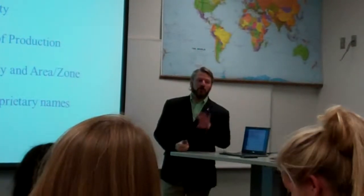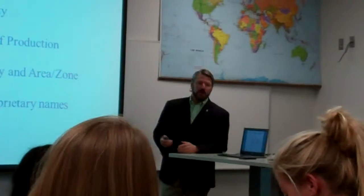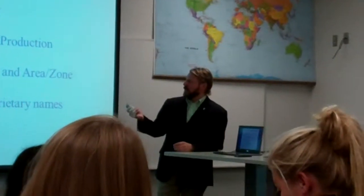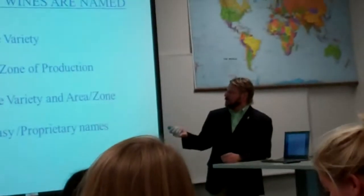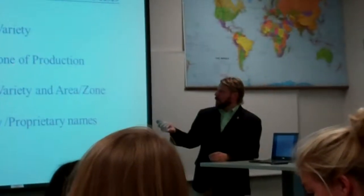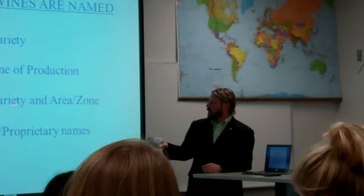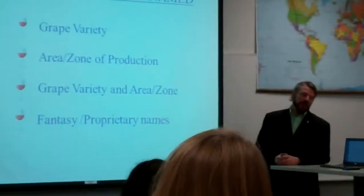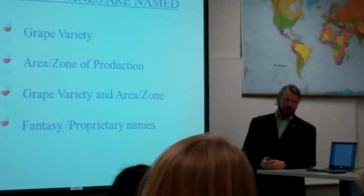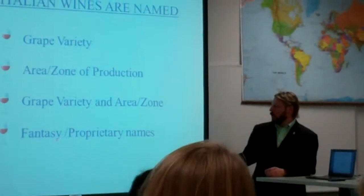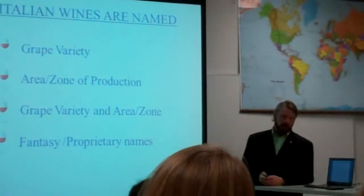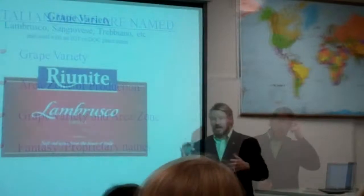You can name an Italian wine in four different ways. You can name it after a grape variety, an area or a zone of production, a grape variety and an area or a zone of production, or a fantasy or proprietary name.